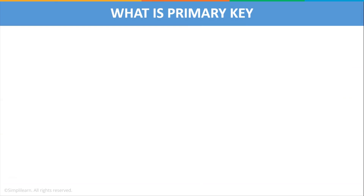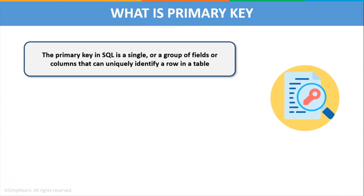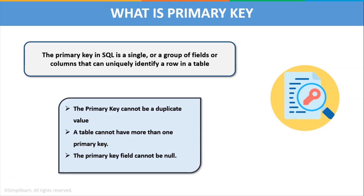First, let us look at what exactly is a primary key. The primary key is one of the most important and commonly used SQL keys in databases. The primary key in SQL is a single or a group of fields or columns that can uniquely identify a row in a table. Simply put, it is a column that accepts unique values for each row. Whenever you use the INSERT INTO command to insert new values in a table, the value for a primary key column needs to be unique. The primary key uniquely identifies each row of a table and gets a unique index for each primary key column, which helps with faster access.